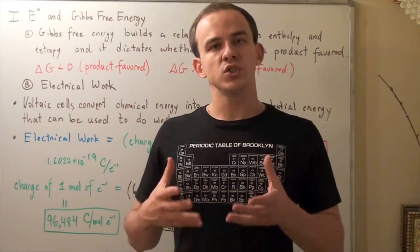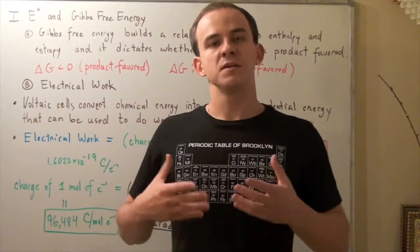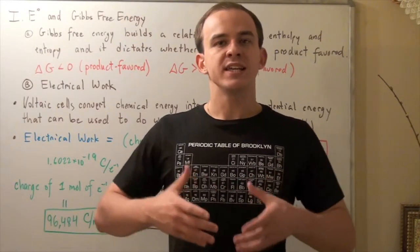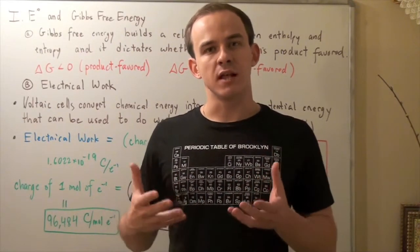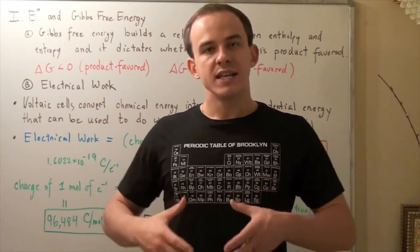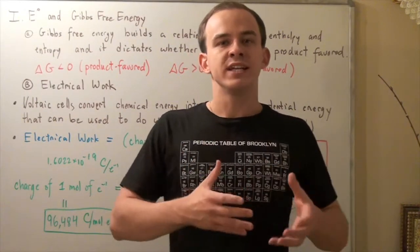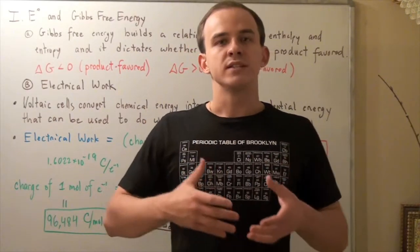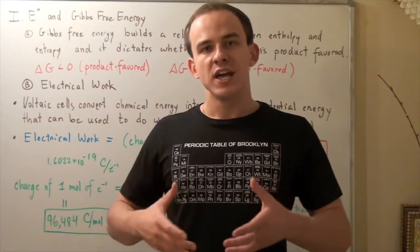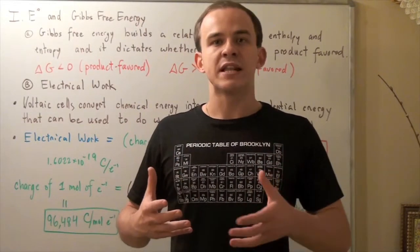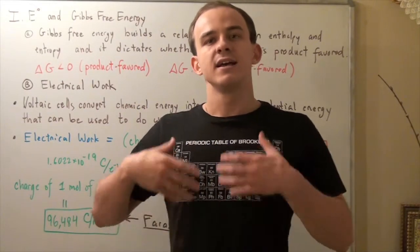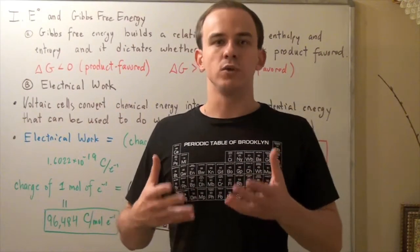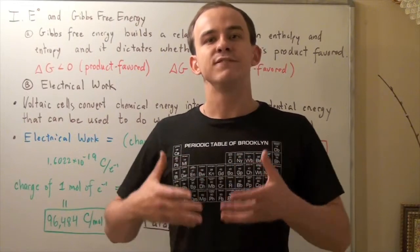Electrical potential difference, also known as electromotive force or simply cell voltage, is the difference in voltage between the anode and the cathode of an electrochemical cell or a voltaic cell. This difference in voltage allows electrons to flow from the anode to the cathode. A positive cell voltage indicates that our reaction is product-favored — it's spontaneous — while a negative cell voltage indicates a reactant-favored reaction.